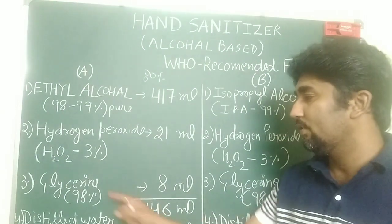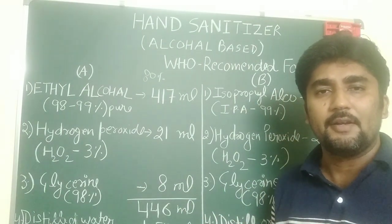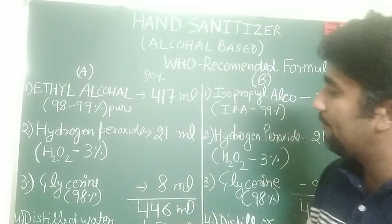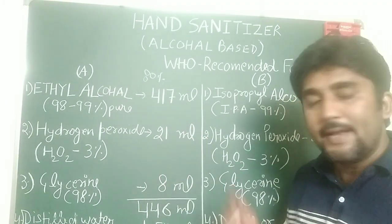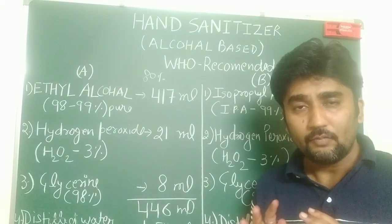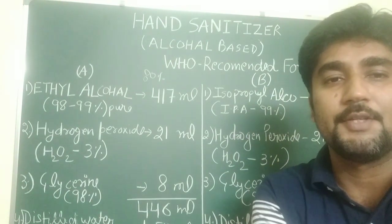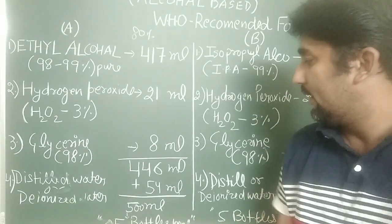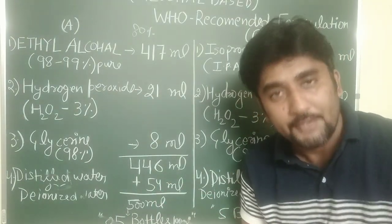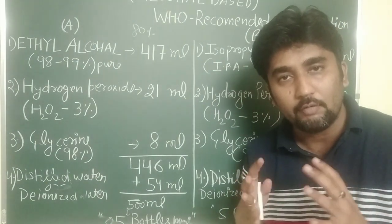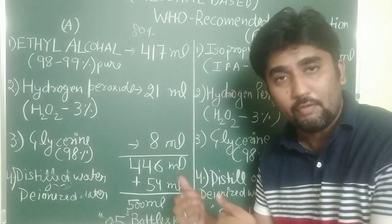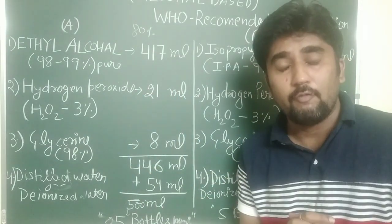After adding the hydrogen peroxide, mix and swirl the plastic container. Then add glycerin — glycerin is a little viscous but there is no problem. Take 8 ml of glycerin. If you combine all three: 417 ml plus 21 ml plus 8 ml, the sum comes to 446 ml. We need to make this up to 500 ml, so we add 54 ml of distilled water. The total volume of the formulation will be 500 ml.